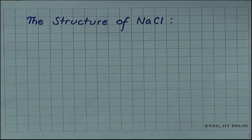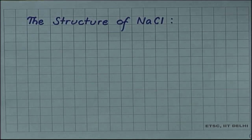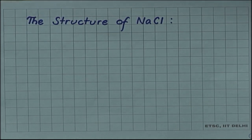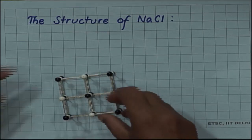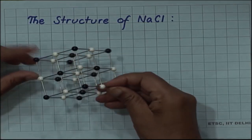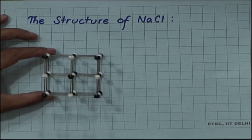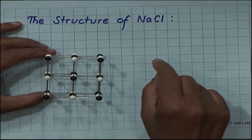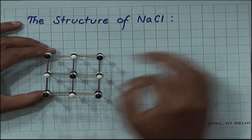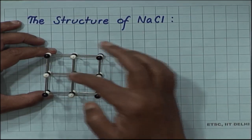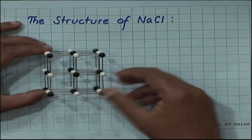What is this structure of sodium chloride? Let me show you a model of the sodium chloride structure. This is a three-dimensional model — you can see the top face of the unit cell, with the black ones representing chloride and the white ones representing sodium.